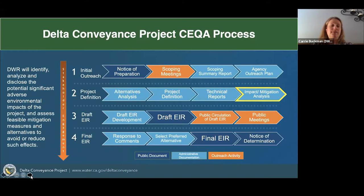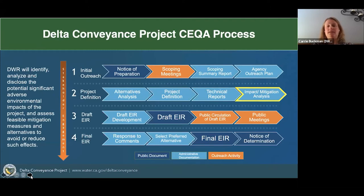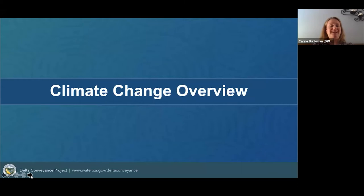From here, we'll move towards preparing the draft EIR. That will be released in mid-2022. At that point, highlighted in orange, that is a major opportunity for public outreach. We'll circulate the draft EIR and hold public meetings to talk about and hear comments on the draft EIR. And then we'll move towards the final by responding to comments, having a final EIR, and a notice of determination. And back to Juliana.